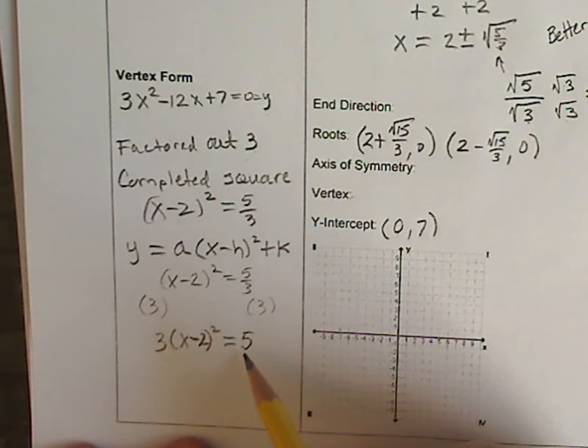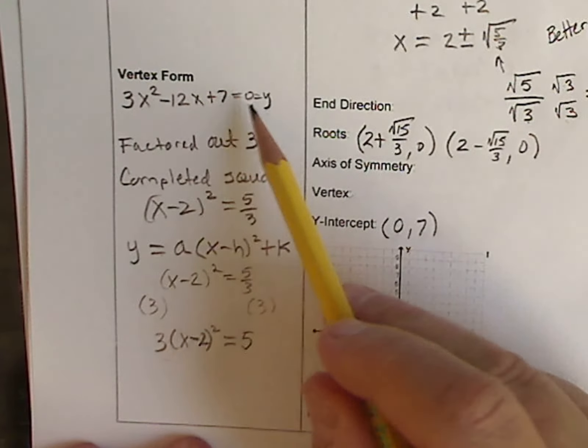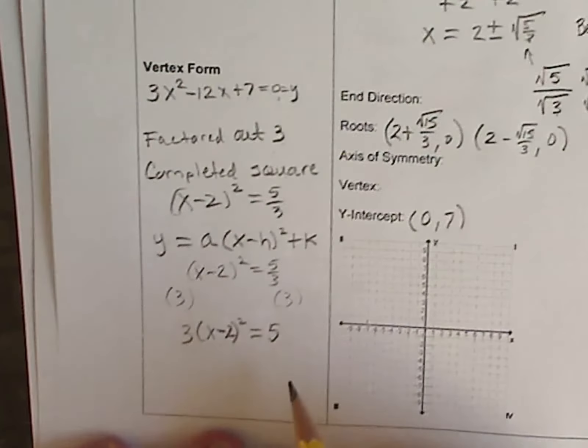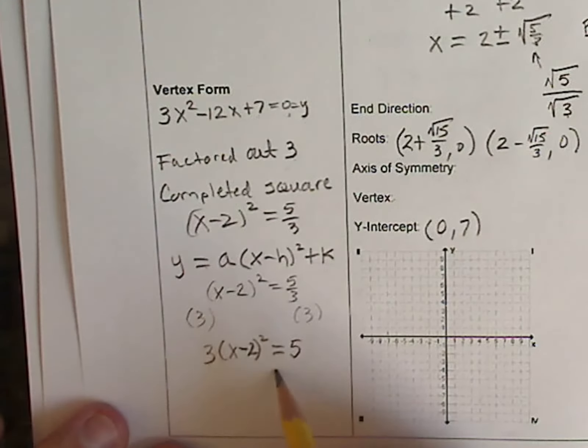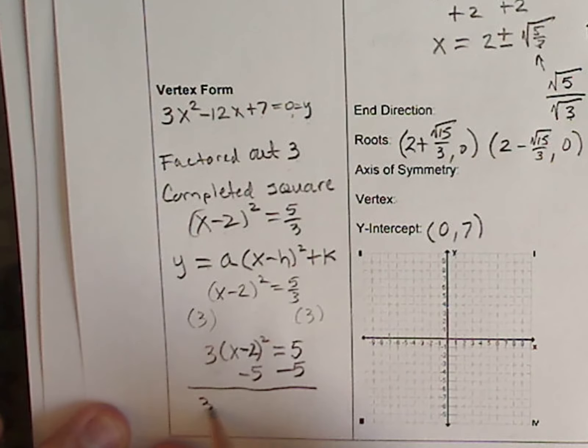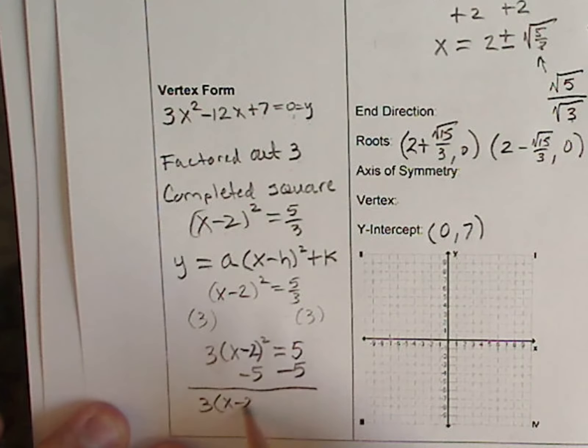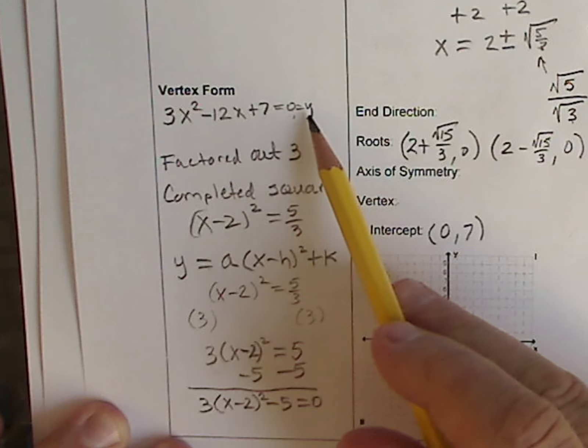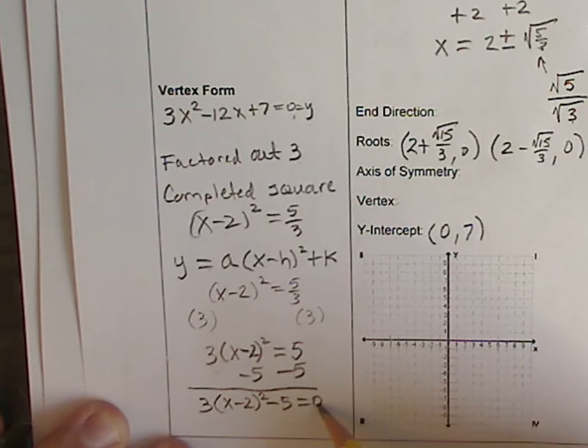I need to get this 5 out of here, because I need to get back to a 0, because that's what my y equals. When I get to a 0, I can sub in y for that 0. This is simply taken care of by subtracting 5. Now I have 3x minus 2 squared minus 5 equals 0. 0 is what I had set my equation to. I had set y to 0, so y can now go in here.